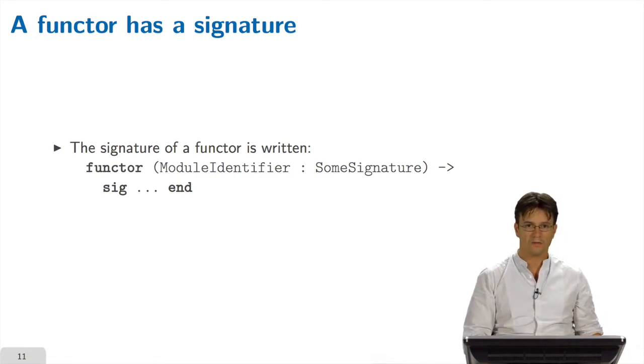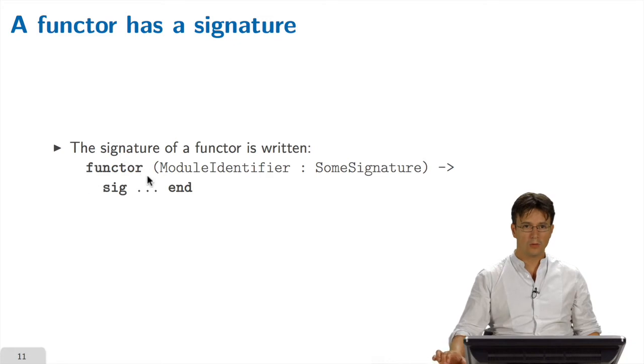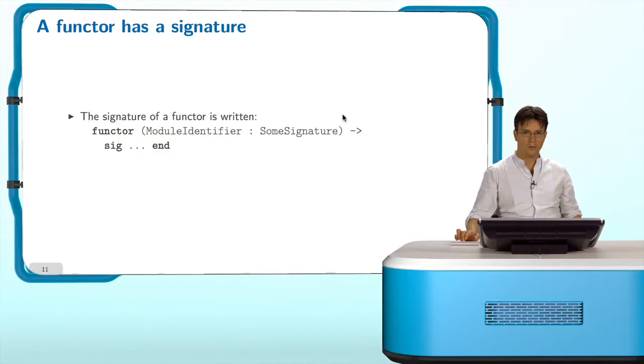The language of signatures is extended to be able to handle functors. We have just a new keyword, functor, with the type of the argument, and the name of the argument, an arrow, and a signature. The types that are in the argument can be mentioned inside the definition of the signature.